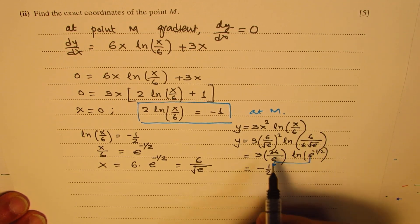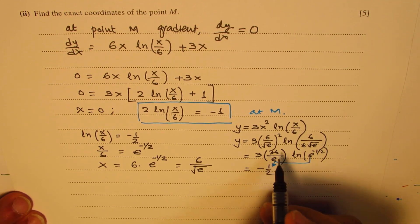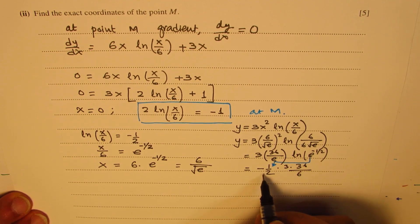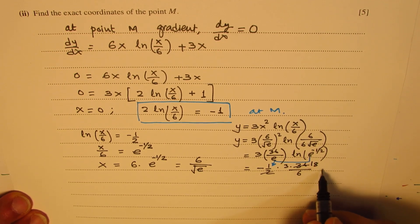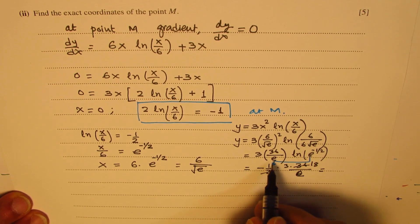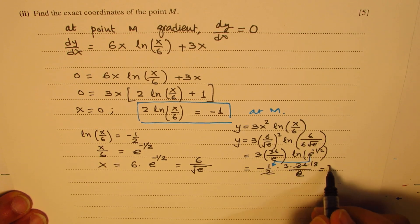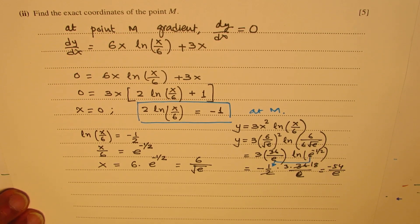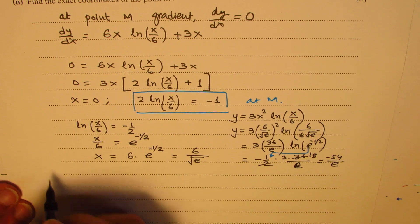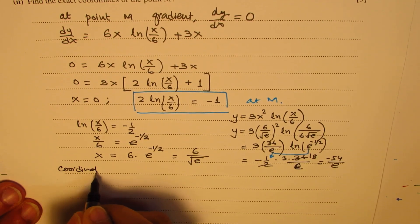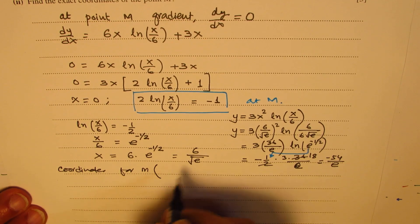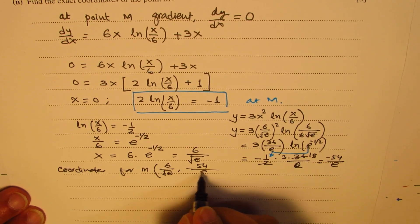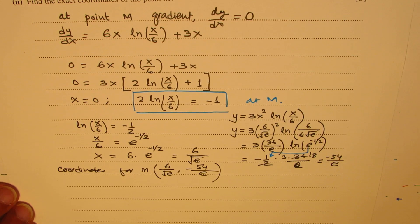And here we get 3 times 36 over e. Now, we'll divide this, get 18, and 18 times 3 is over e. So what we get here is minus 54 over e. So we get minus 54/e as our answer. So the coordinates for M are, the x value is 6 over square root of e, and the y value is minus 54 over e. So that is how we can actually solve this question.